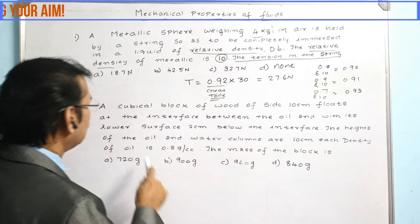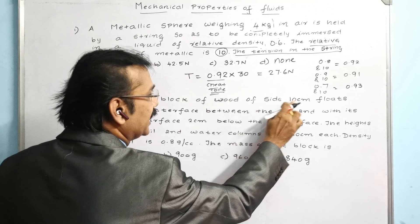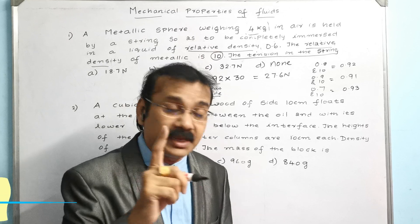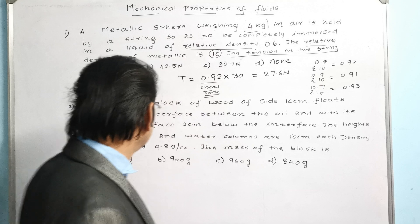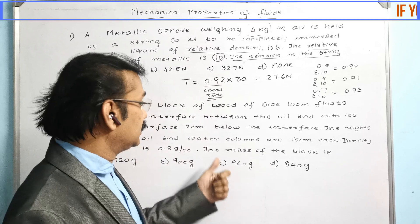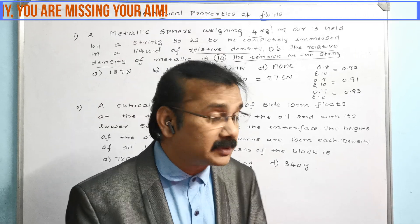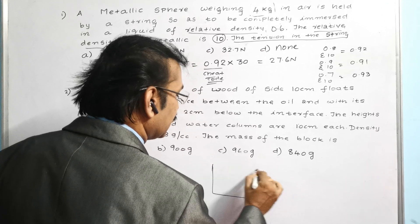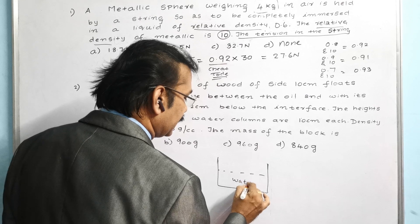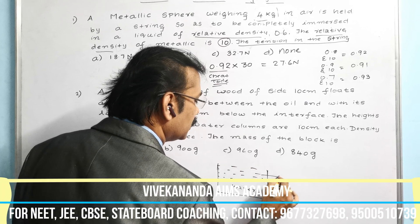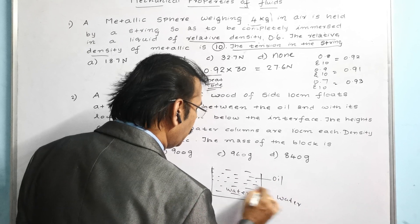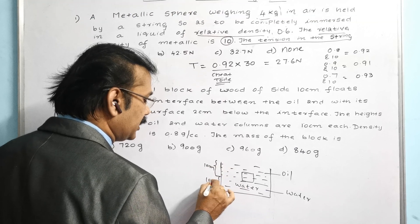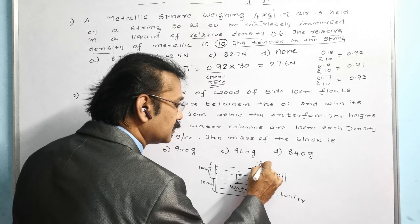Now for the second question: a cubical block of wood of side 10 cm floats at the interface between oil and water, with its lowest surface 2 cm below the interface. The heights of the oil and water columns are 10 cm each. The density of oil is 0.8 g/cc. Find the mass of the block. A diagram is needed — water is at the bottom, oil floats on top, and the wooden block sits at the interface.